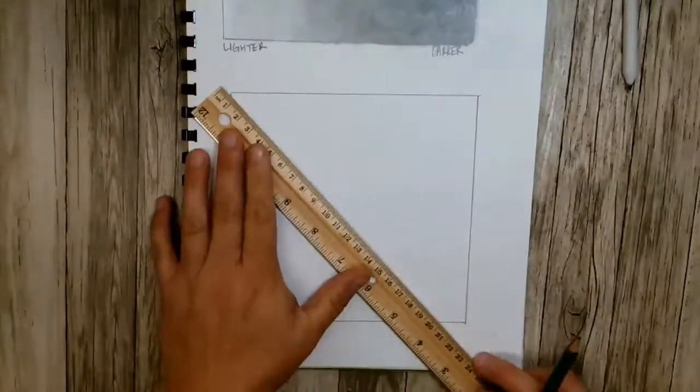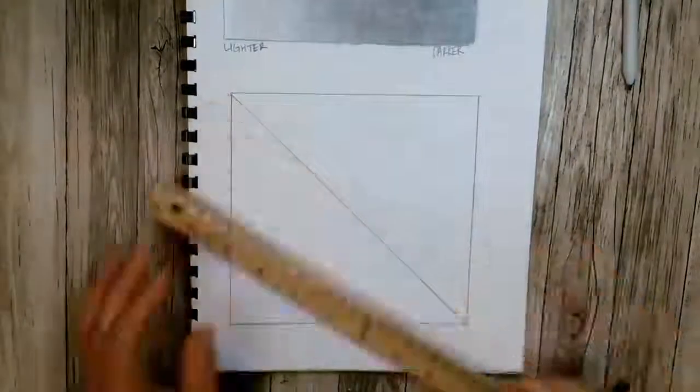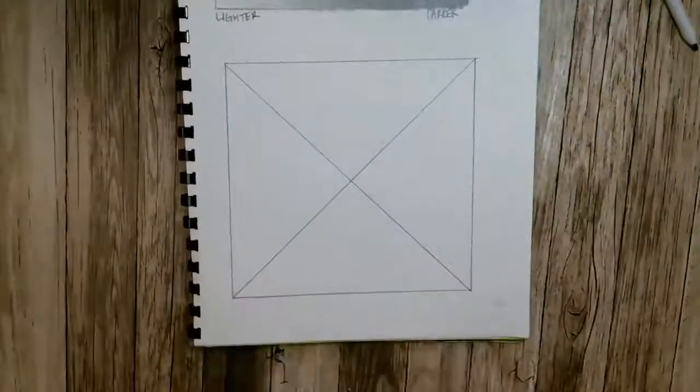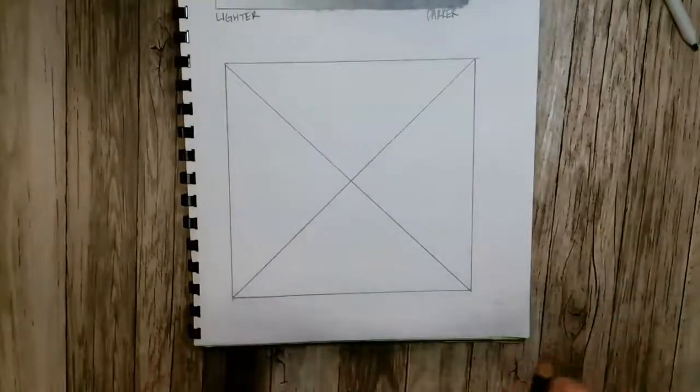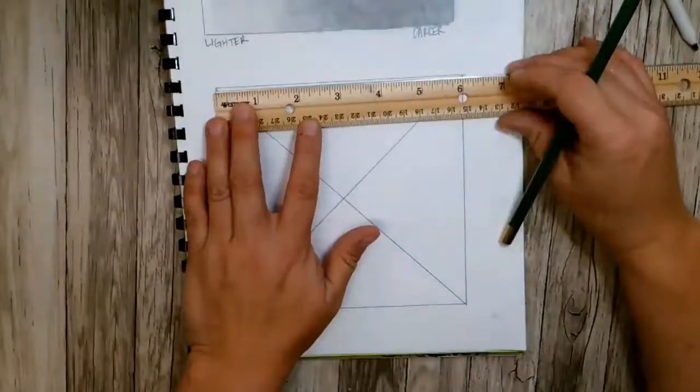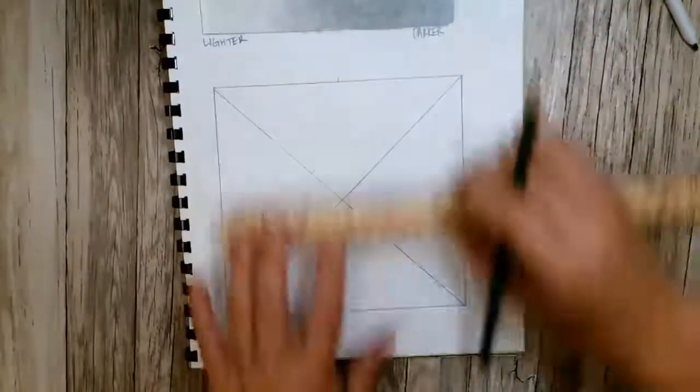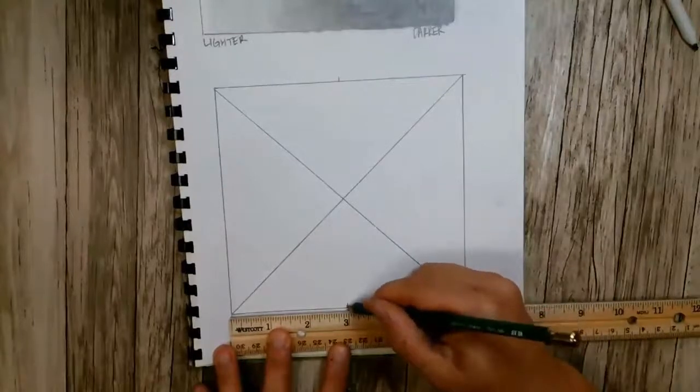And then I want you to connect the corners with a line. And then halfway over in each box, I want you to make a little tick mark. So that half of six would be three. So I'm going to make a tick mark there and a tick mark there.